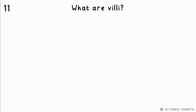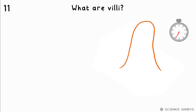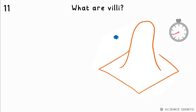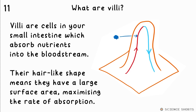What are villi? Villi are the cells in the small intestine that absorb nutrients into the bloodstream. They are hair-like in order to have a large surface area to increase the rate of absorption.